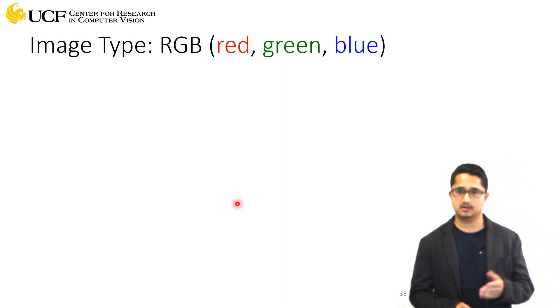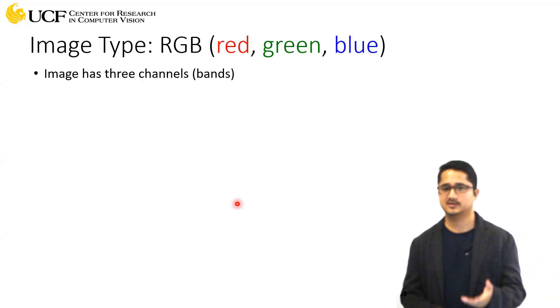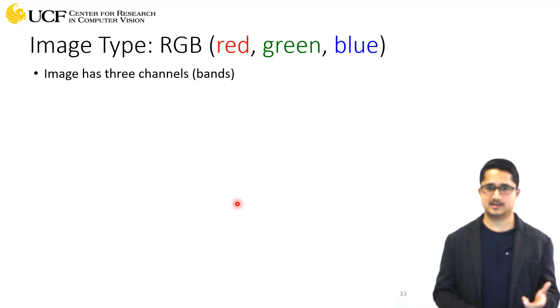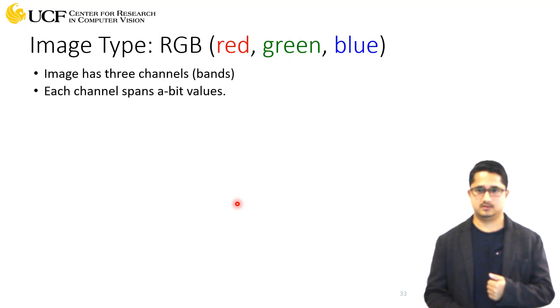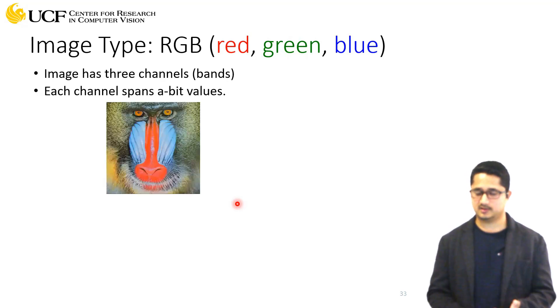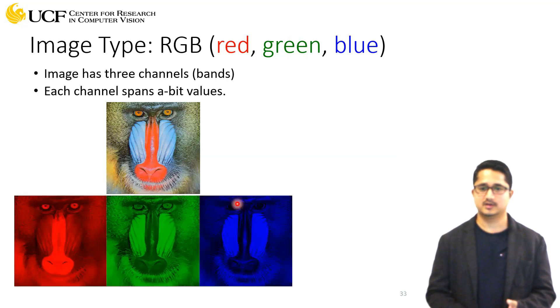Colored images are a straightforward extension if you've understood grayscale images. RGB has three different channels for each band. This RGB image has three different channels.